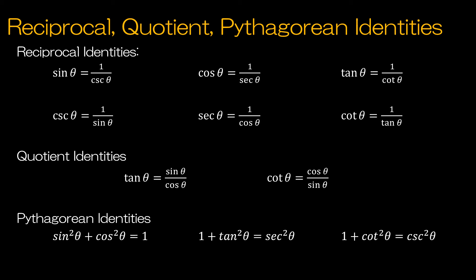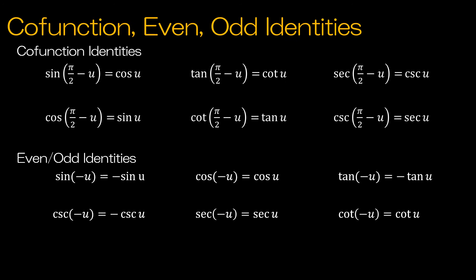I want to point out that any of the Pythagorean identities can be algebraically manipulated. For instance, secant squared theta minus tangent squared theta equals one, simply by subtracting tangent squared theta from each side. And if I had tangent squared theta minus secant squared theta, I could replace that with negative one.